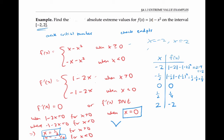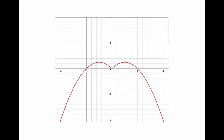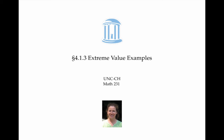My biggest value is one fourth, so that's my absolute maximum value. My smallest value is negative two, so that's my absolute minimum value. Looking at the graph of y equals the absolute value of x minus x squared on the interval from negative two to two confirms this: the absolute minimum value of negative two occurs at two points, and the absolute maximum value of one fourth also occurs at two points. That concludes this video on finding extreme values.